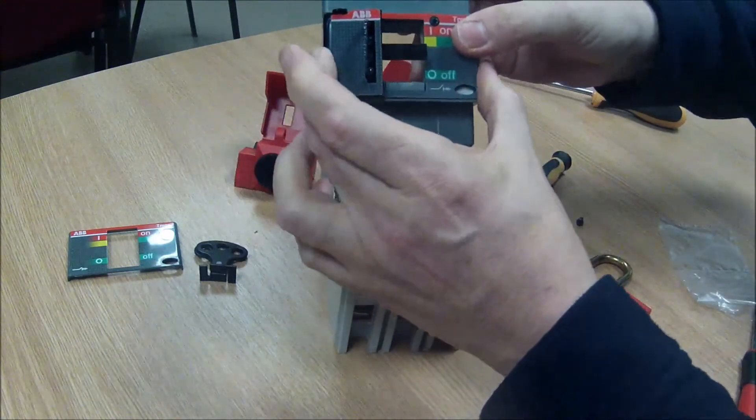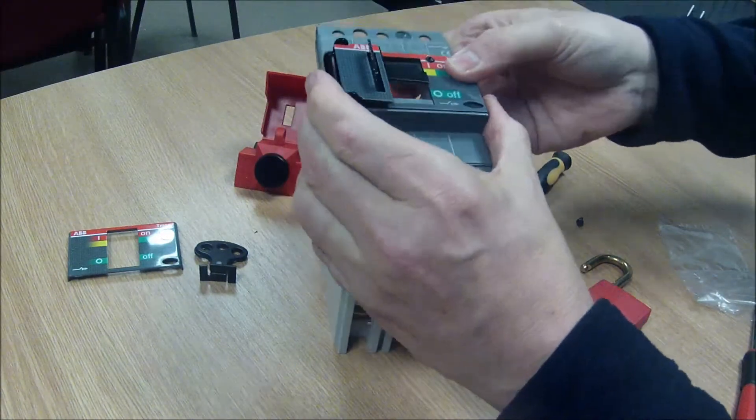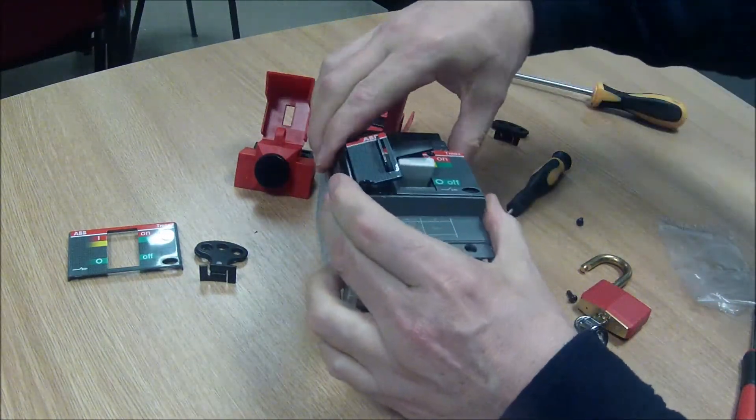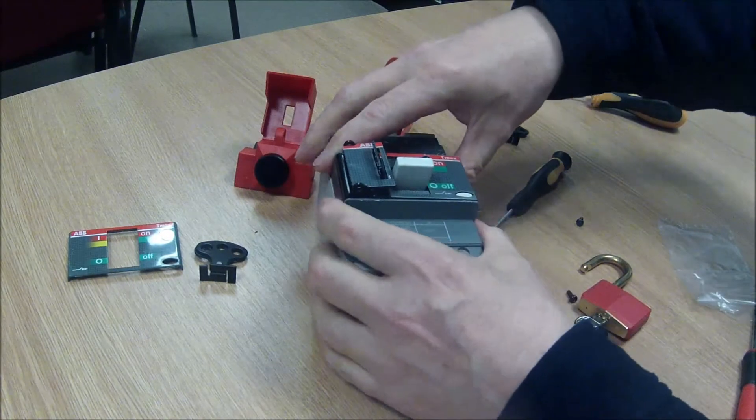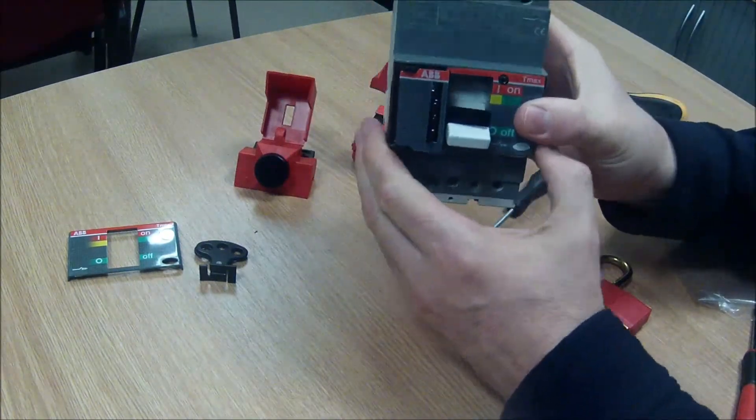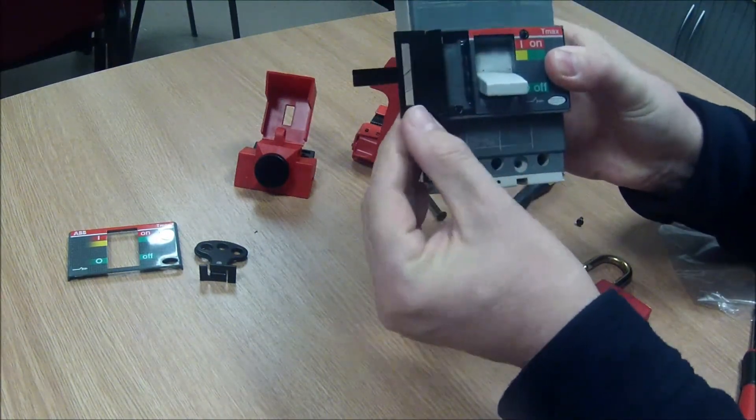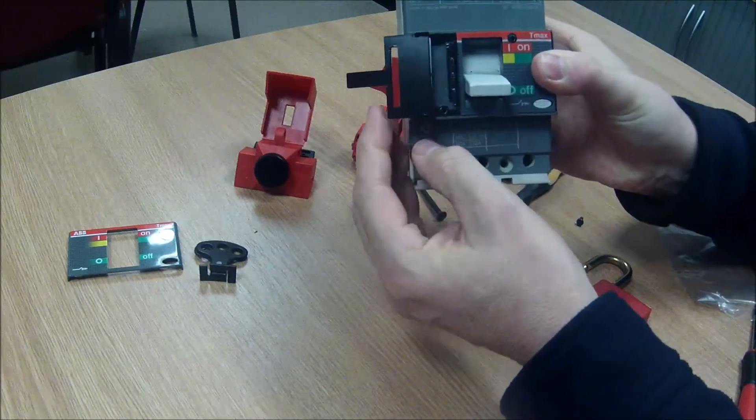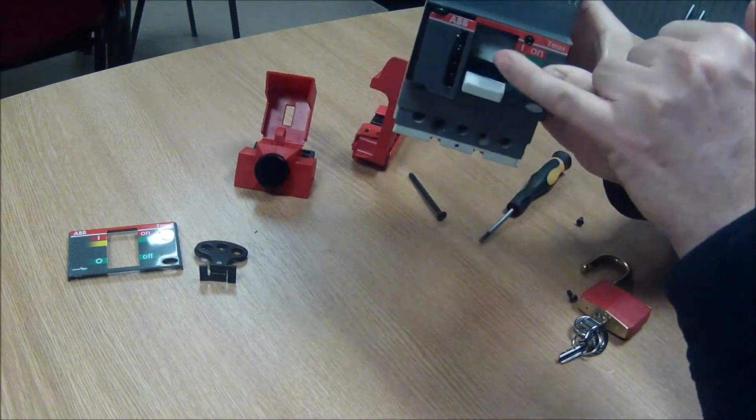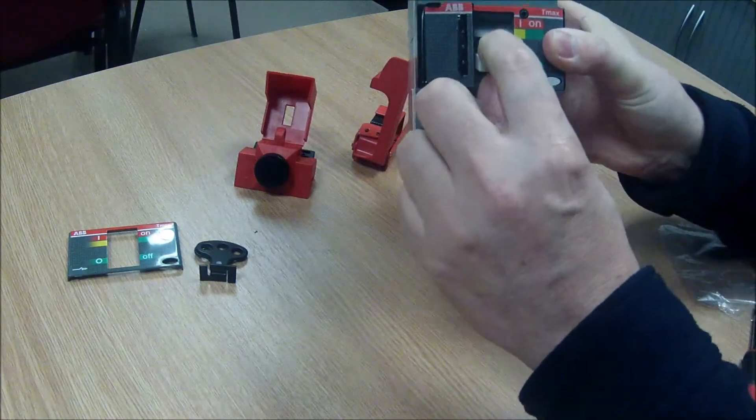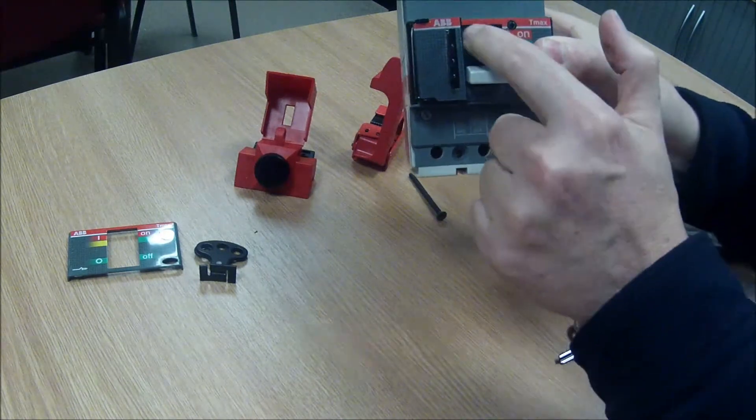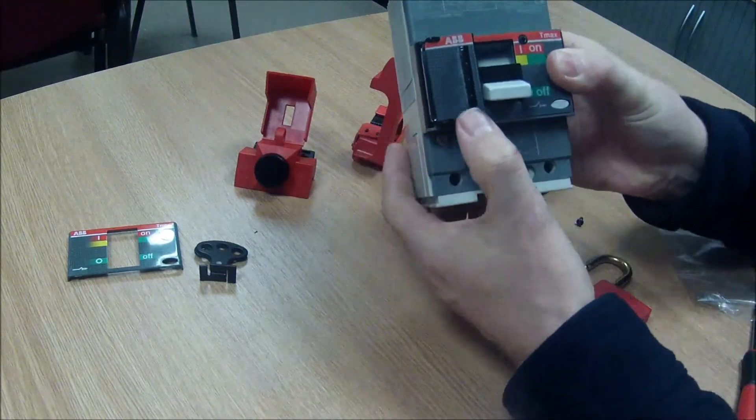Now with those tightened up that cover plate is now securely in place. Lower that back into position. And how this locks out is it's got this little hinge plate here. So when you fold it into the way you can see that tongue there is stopping the toggle of the breaker moving back to the on position.